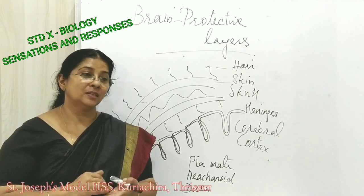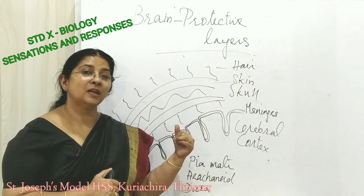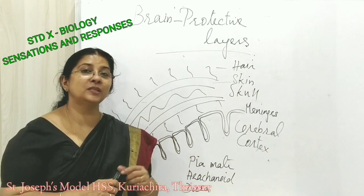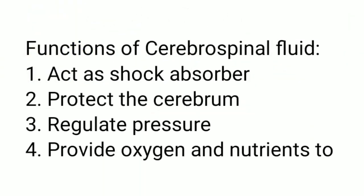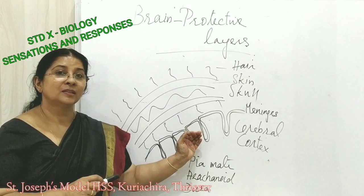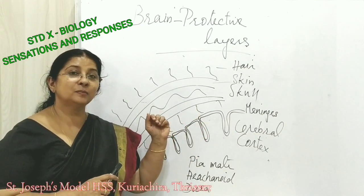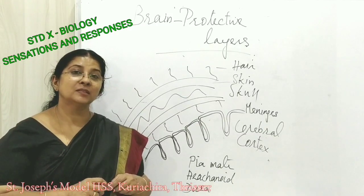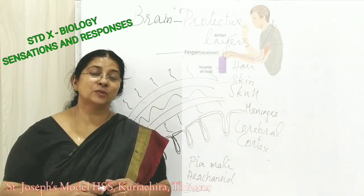The cerebrospinal fluid is formed from blood and is reabsorbed into blood, meaning it provides oxygen and nutrients to the brain tissues. So the main protections of the brain are: the bony cranium or skull, the three-layered meninges, and the cerebrospinal fluid.